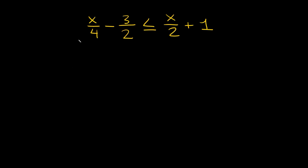Now for this next one, we have x over 4 minus 3 over 2 is less than or equal to x over 2 plus 1. As you can see, we have a bunch of fractions here. So the first thing you want to do in this case is find the LCD — the least or lowest common denominator. The way you find that is by multiplying all your different denominators together. So here we're going to multiply 4 times 2 — we don't multiply by the second 2 because we already have a 2; we don't want duplicates. So 4 times 2 equals 8, and the LCD is equal to 8.